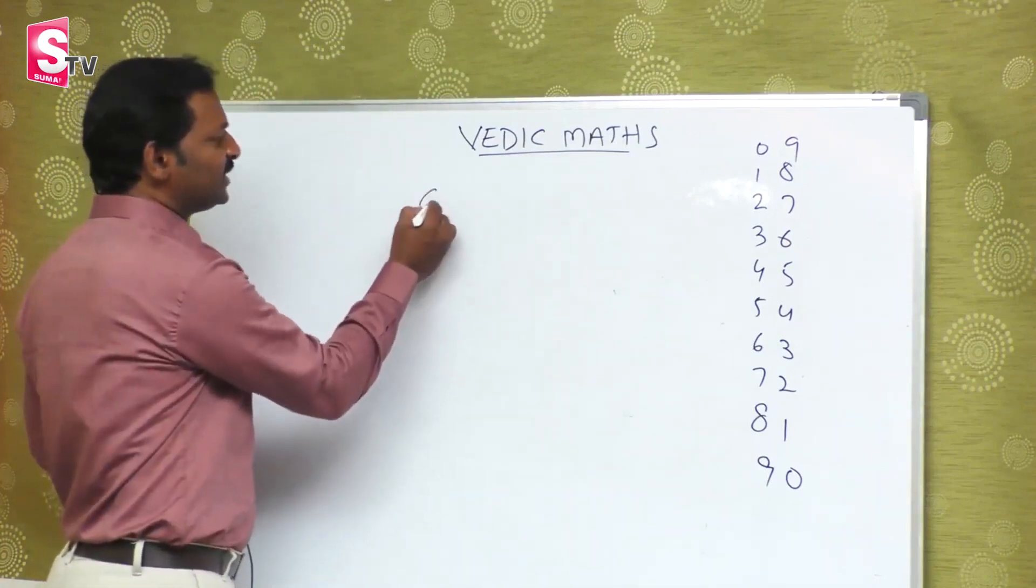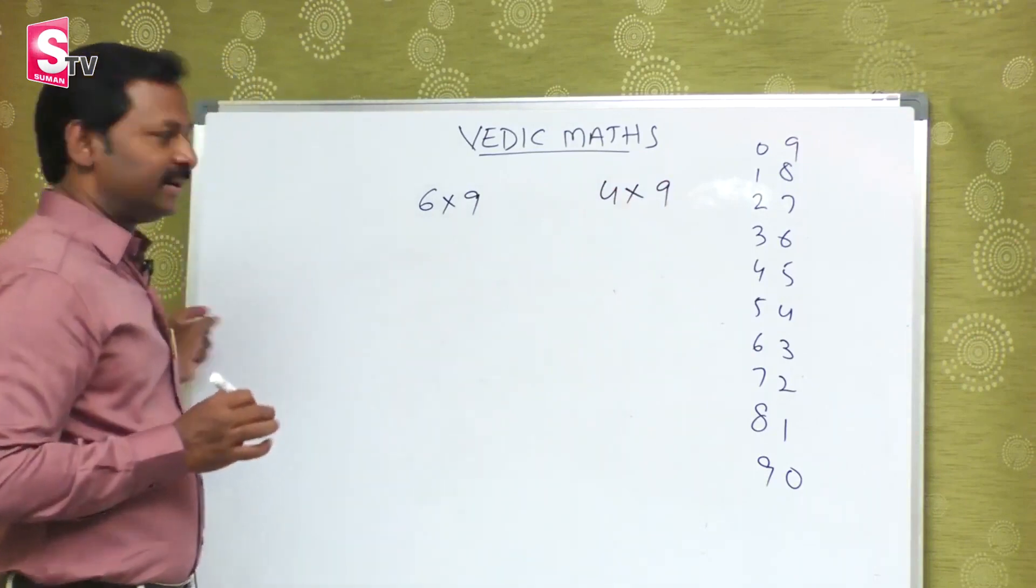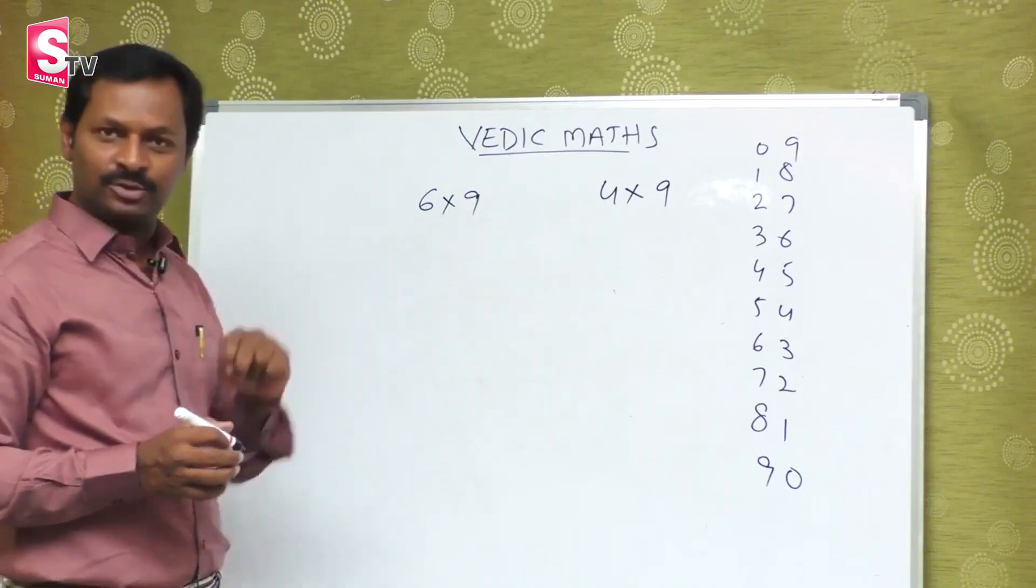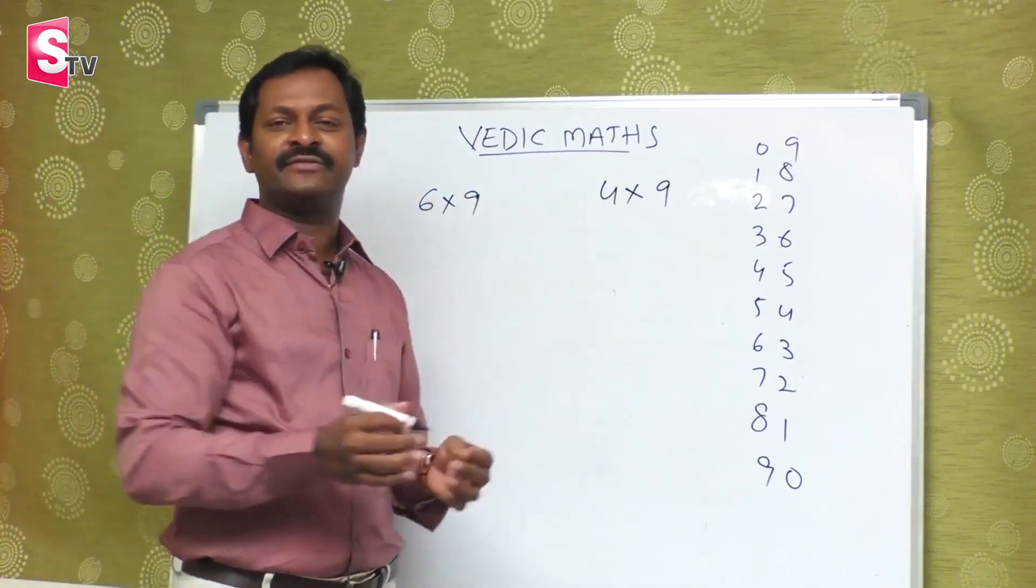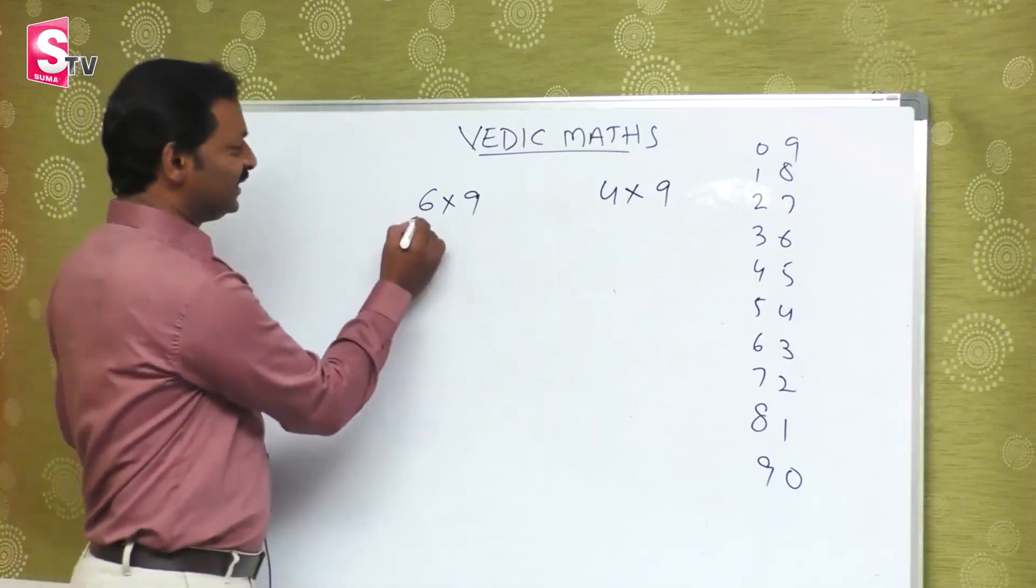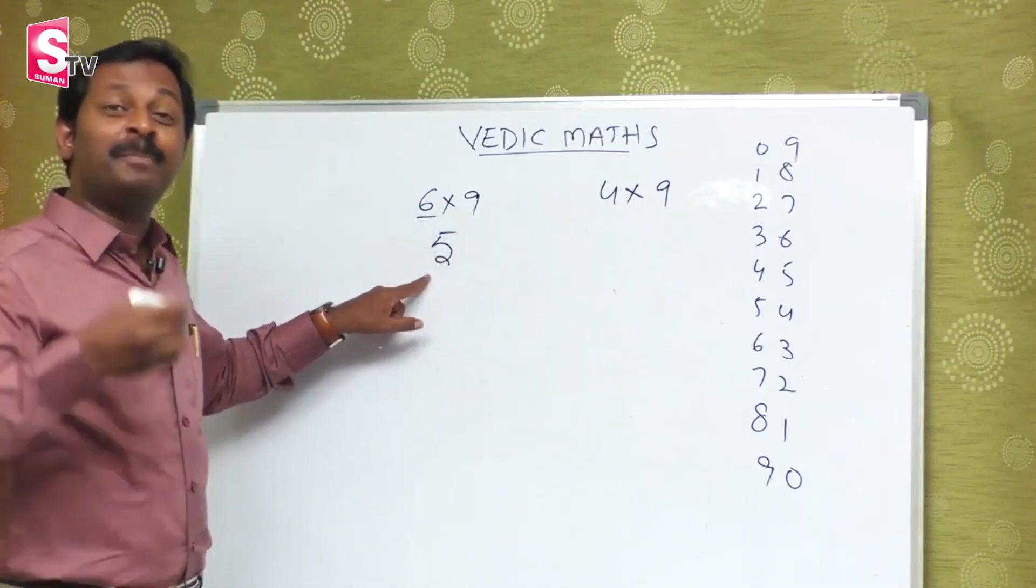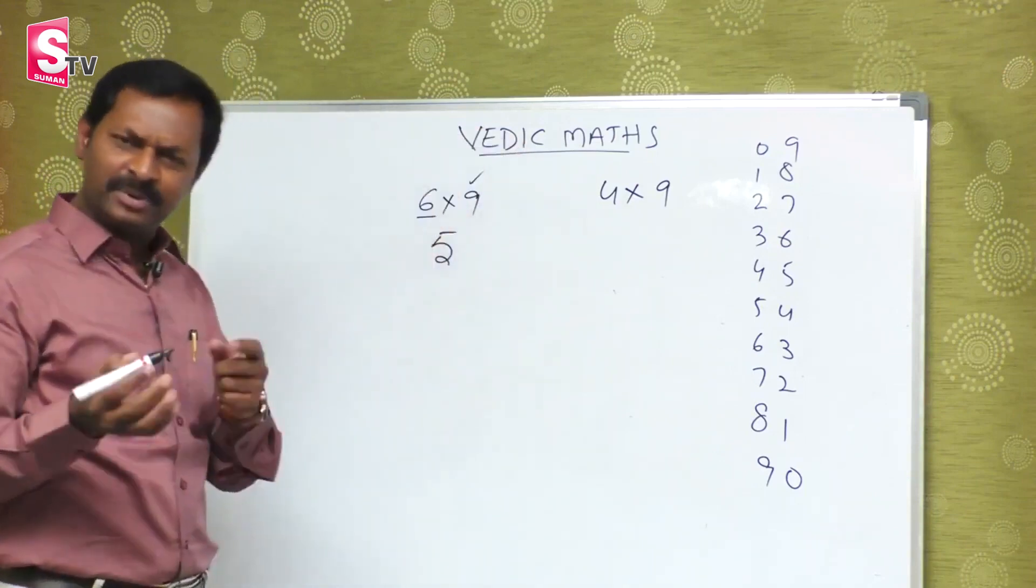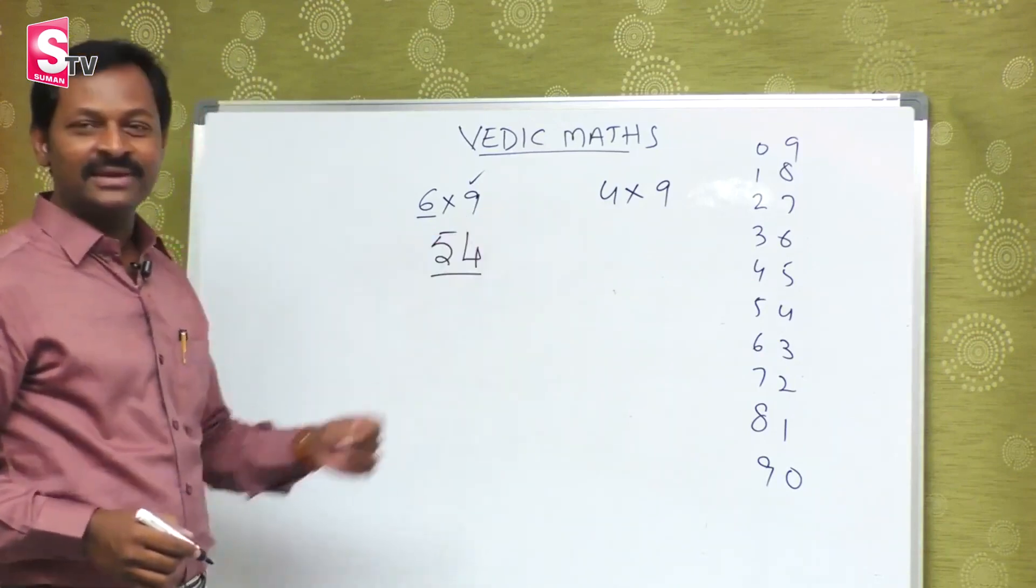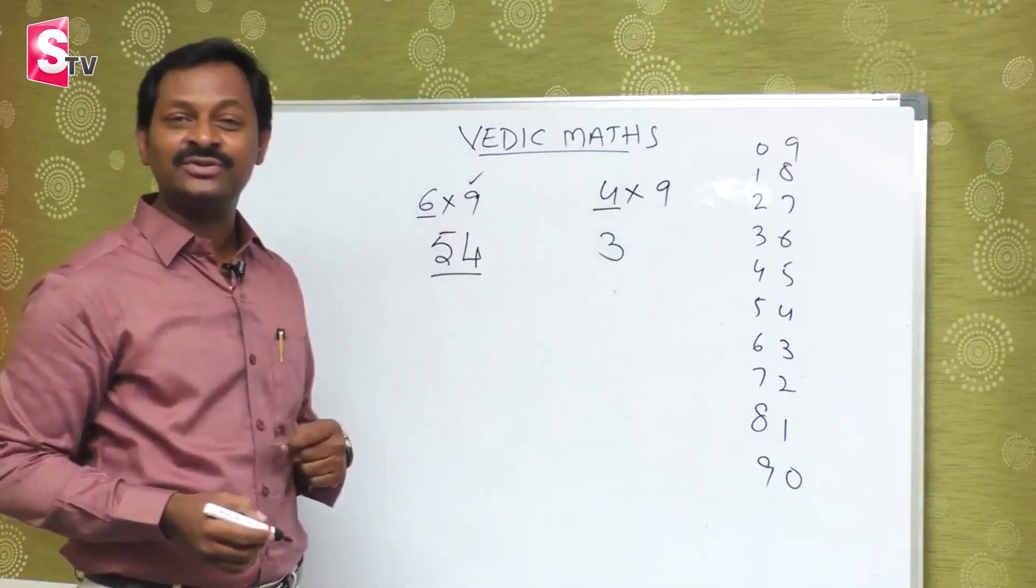Suppose if I take 6 multiplied by 9, or 4 multiplied by 9. In simple logic, if I take a number with 9, like 6×9, take one number less than 6, which is 5. That's the first part of the answer. If I add this 5 plus 4, that's 9. Simple addition. If I add 5 and 4, that's 54. If I take 3×9, one less is 3, and 3+6 is 9. For 7×9, one less is 6, and 6+3 is 9.